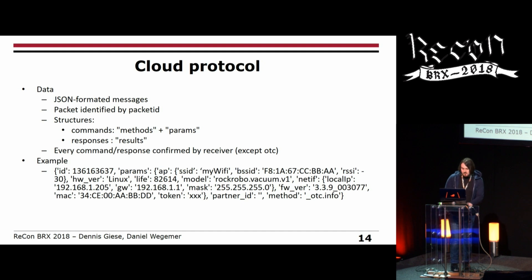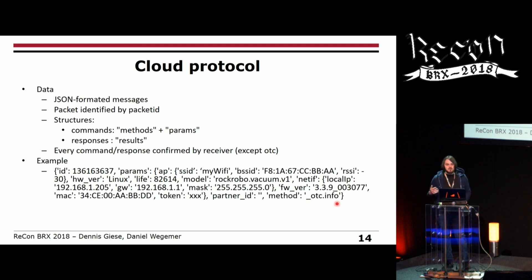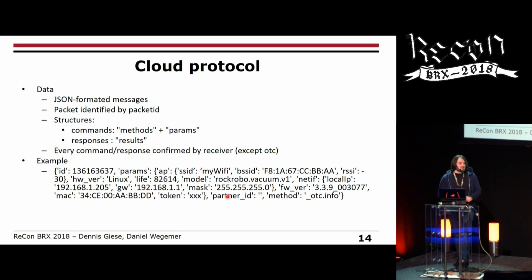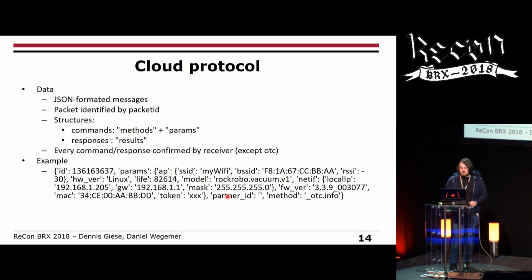Here at the bottom is the OTC info method, which is sent every time the device tries to connect to the cloud. The device tells the cloud which Wi-Fi it's connected to — the MAC address of the Wi-Fi router and the internal IP addresses. So technically, the cloud knows exactly which SSID the device is connected to and the MAC address of your router.